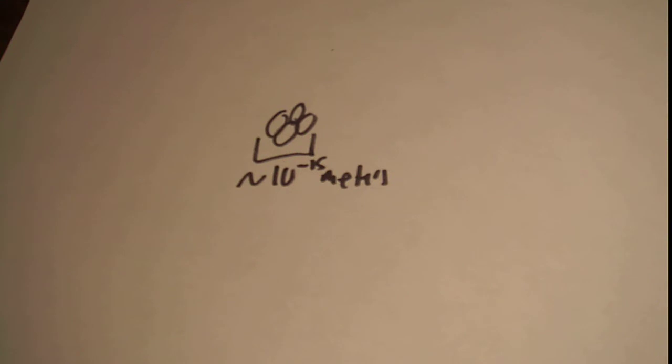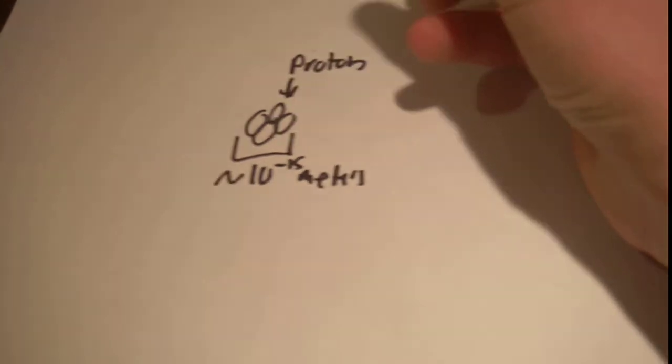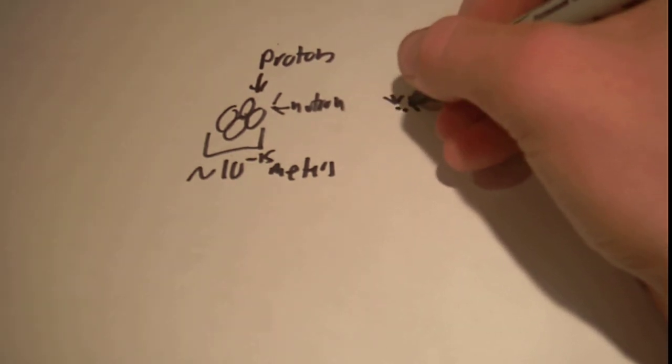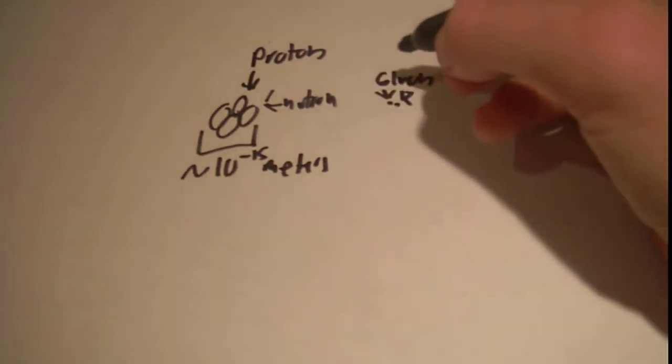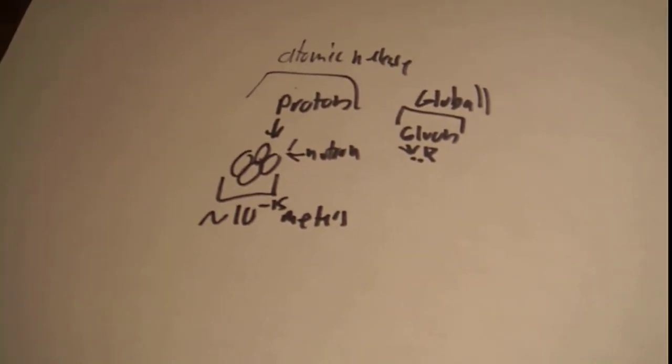This is why some people think that gluons can form these particles made solely of gluons, where you have proton and neutron. Some people think there would be something like this, where this is both gluon column glue balls. So this is our atomic nucleus. This would be glue ball. They haven't been experimentally confirmed, but they're looking for it in the LHC. Hope to find some soon.